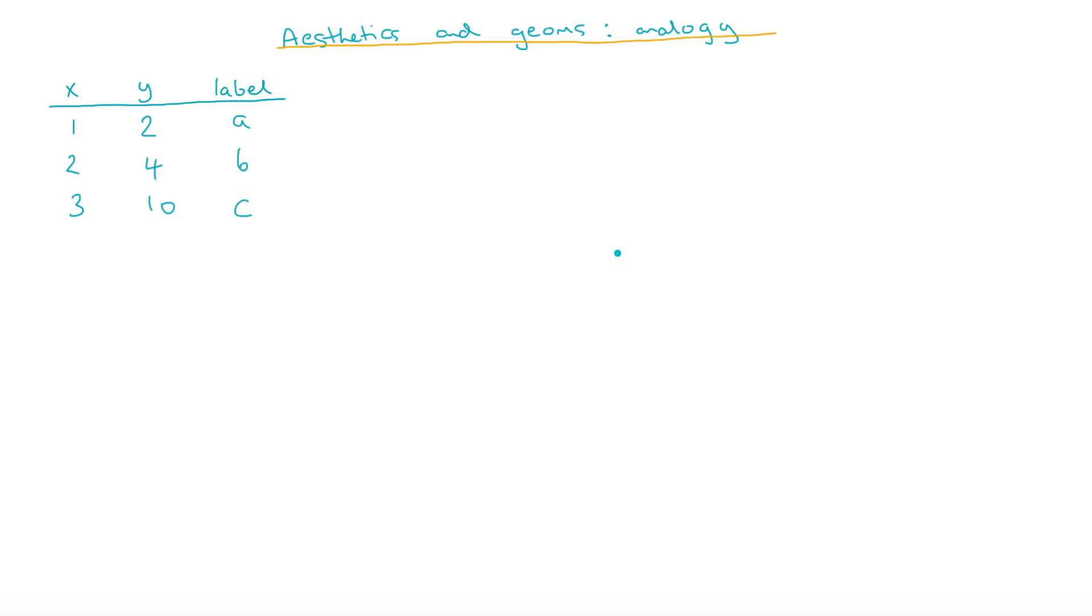In this video, I want to try and explain aesthetics and geoms a bit further using an analogy. And the data set that we're going to be thinking about is the simple one that we considered before, which looks something like this.